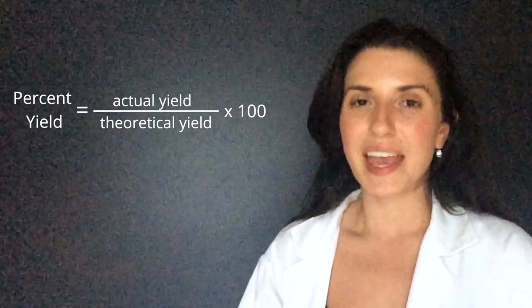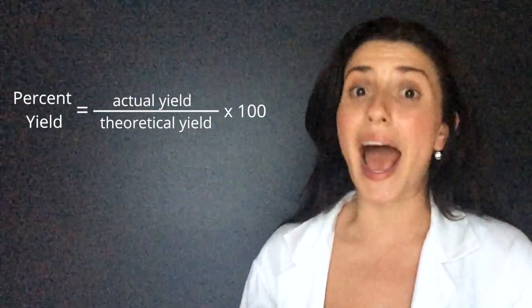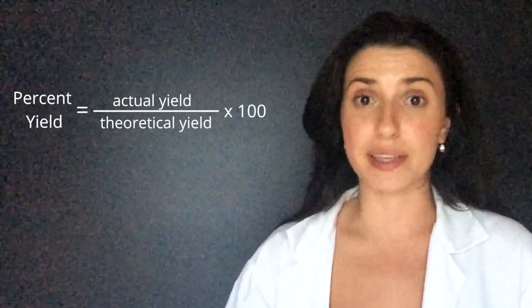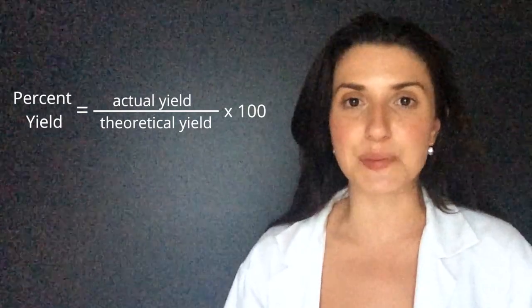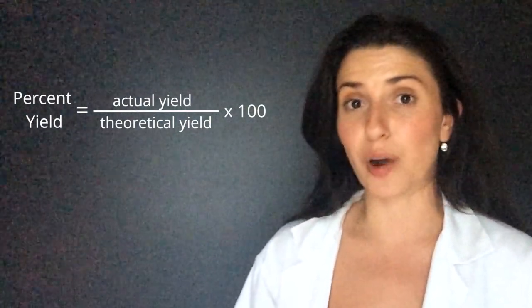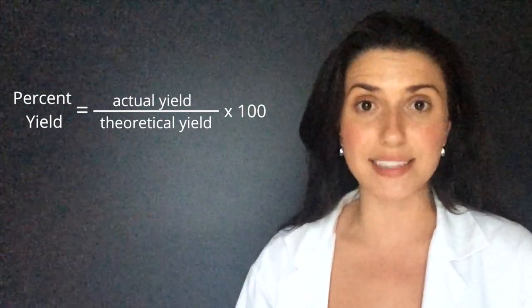So what do these mean? The actual yield is what actually happened in the lab. At the end of the experiment you'll find the mass of your product or the moles of your product, and that will be your actual yield.